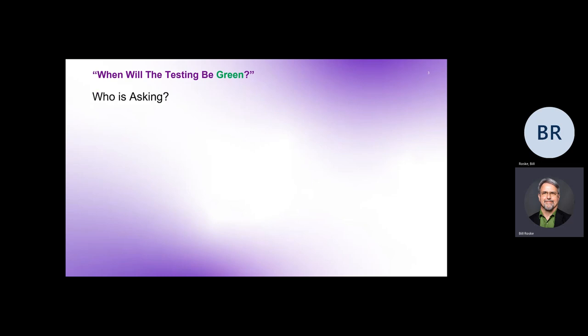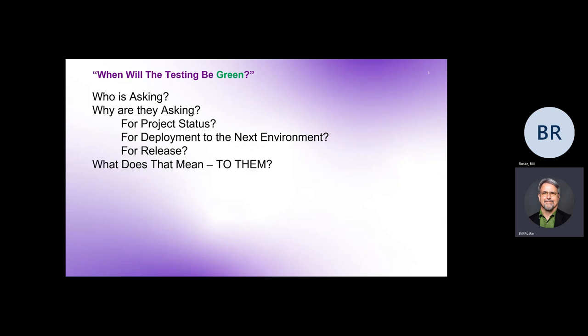I started thinking, who's asking that question? Who's asking when is testing going to be green, and why are they asking? Are they asking for project status? Project managers like red, green, yellow, right? Green is everything's good. Red is everything's bad. Yellow usually means we're trending in the wrong direction, right? But why are they asking? Is it just for status? And is the result of our automated regression being green, is that really a good indication? Is it for development or deployment to the next environment? Is it good enough to go to the next environment? Or can we release to the client, the ultimate environment, right? And what does that question mean to them? Why are they asking? What are they trying to get to?